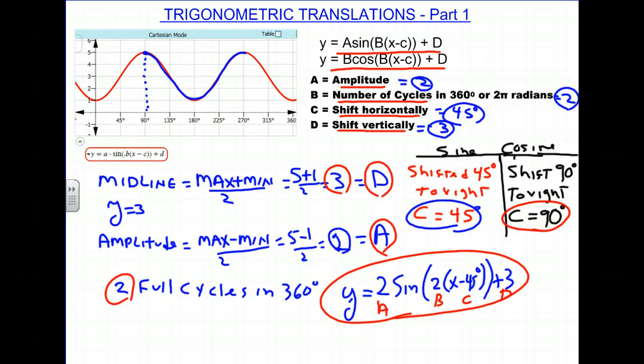So shift 90 degrees to the right, which means C is equal to 90 degrees. That's if it's a cosine. We should write that up above here. So 45 degrees for a sine, but 90 degrees for the cosine. So let's write our equation. Once again, it's going to be Y equals still 2, to the cosine, B is still 2, times X minus, but in this case, X minus 90 degrees, plus D, which is still 3. And that is our answer if we want to consider this to be a cosine.